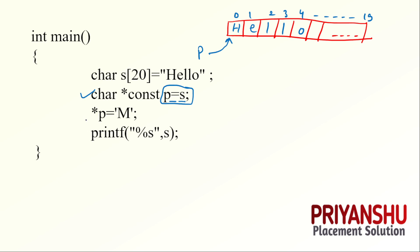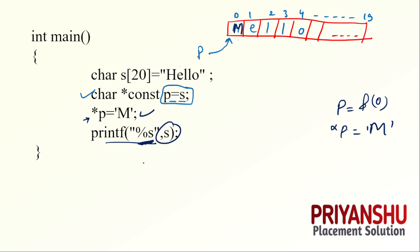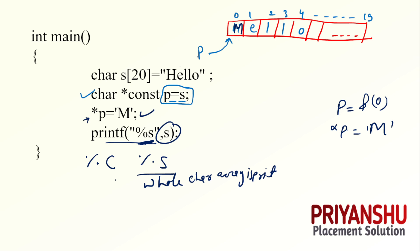P is pointing to the start of the array. The expression '*P = M' means P holds the address of the 0th index. If you have learned about pointers in C or C++, you know that to change the value at a pointer variable, we use '*P'. So in place of 'H', now 'M' is there. Then printf with %s is used. Keep in mind: %s prints the whole character array, while %c prints only a single character. So with %s, 'MELLO' will be printed. This is your correct answer.